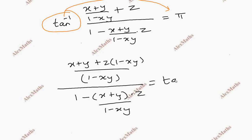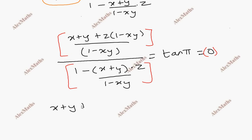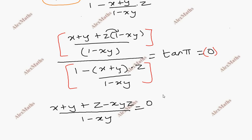Since tan pi equals 0, we use this. The numerator gives us z minus xyz, whole divided by 1 minus xy, equal to 0 into the whole term. So this whole term equals zero.